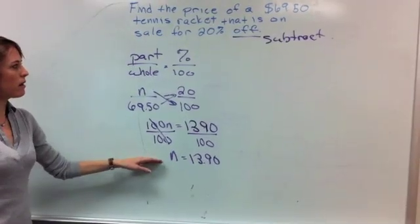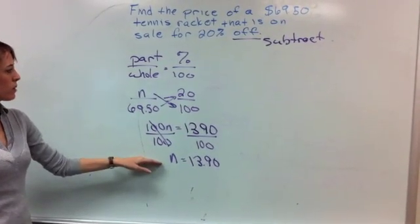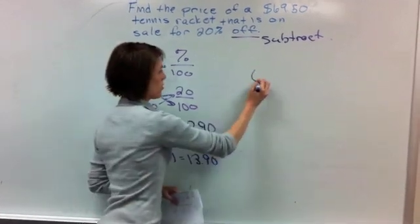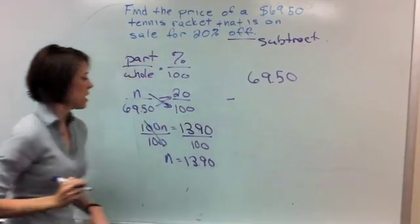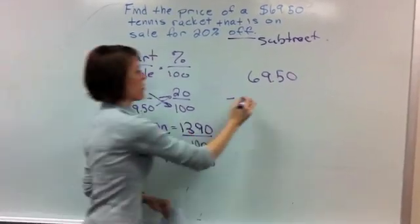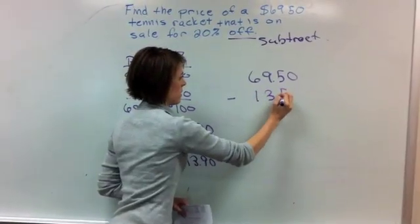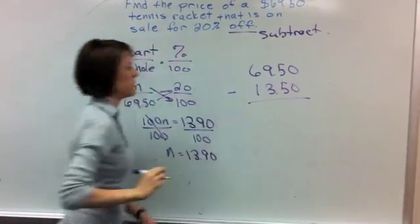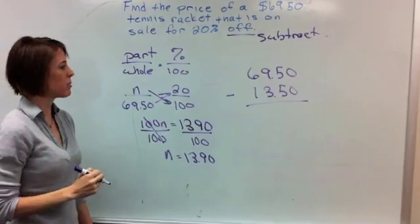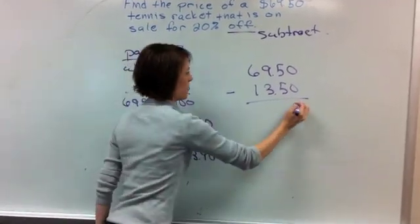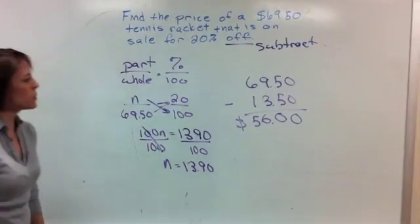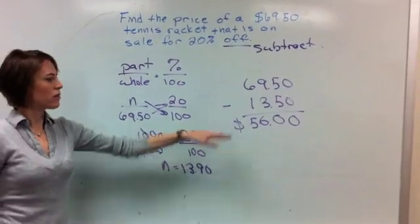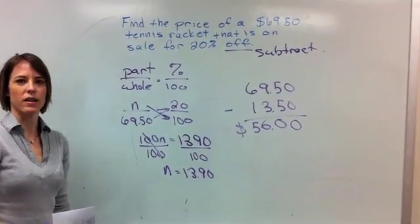So we're going to take this amount and we need to subtract it from our total amount. So we started with $69.50. And we're going to subtract our discount of $13.90. So now we're going to find out how much money we're going to pay for the tennis racket. So that means when you go up to the cash register, you're going to fork out $56 for the tennis racket.